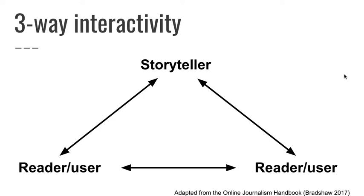One of the common blind spots when it comes to telling stories with interactivity is that often when we talk about interactivity we think about how the user or audience can communicate back to us — there might be a facility for them to add a comment or click on something and that changes what they experience. But it's easy to overlook that there can also be interactivity between the audience themselves, between readers or users — not just between us and them. How are we facilitating that user-to-user communication? It might be something like creating a hashtag or a forum where they can communicate with each other.